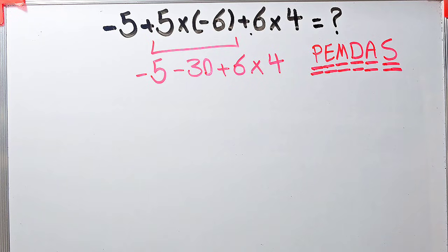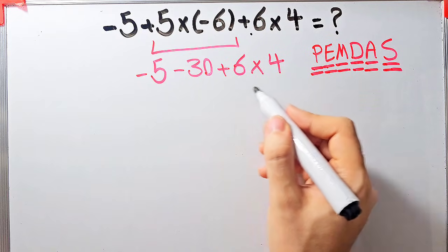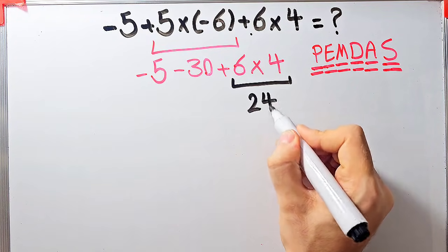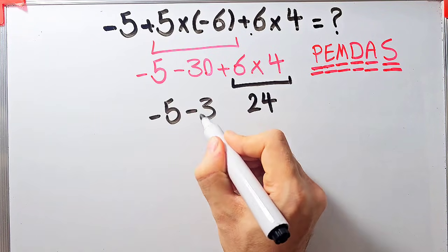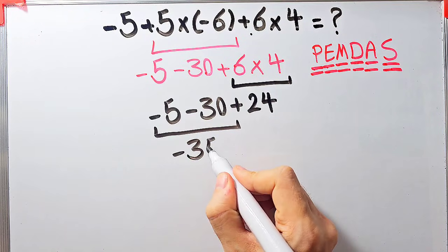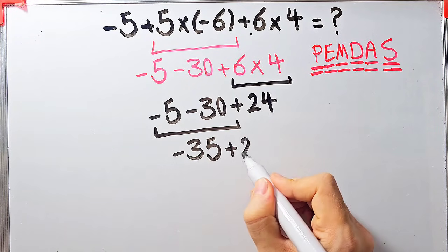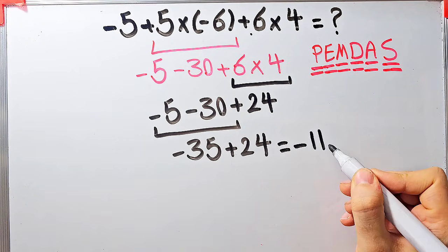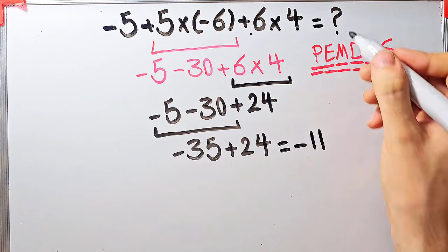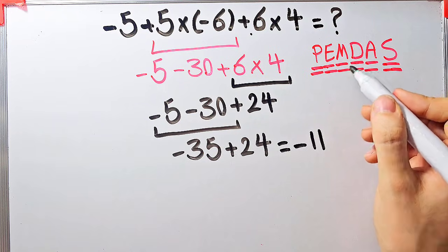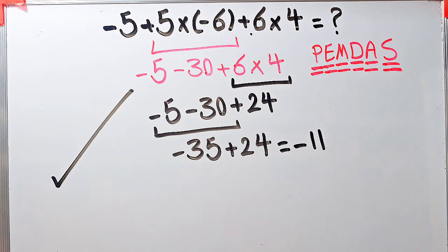Now we have subtraction and multiplication. In this step we simplify the multiplication: 6 times 4 equals 24. Now the question is negative 5 minus 30 plus 24. Negative 5 minus 30 equals negative 35. Now the question is negative 35 plus 24, which equals negative 11. The final answer of this question equals negative 11. If you want the right answer, you must follow the PEMDAS rule.